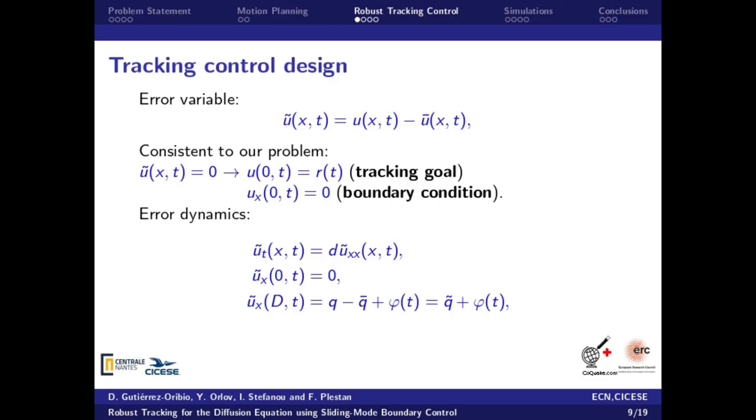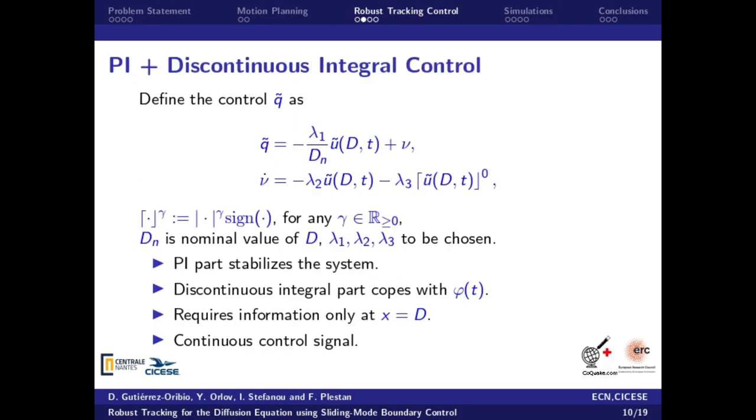The error dynamics is then obtained where the new control input Q-tilde must stabilize the closed loop, despite the external perturbation bar phi and starting from any initial condition. Such control input was designed as a PI algorithm plus a discontinuous integral term.